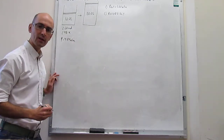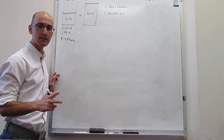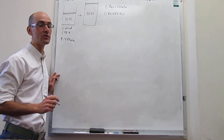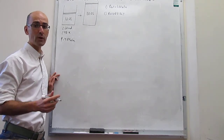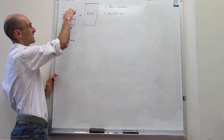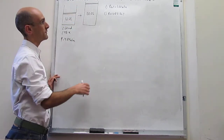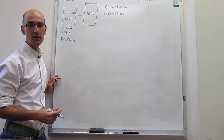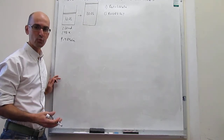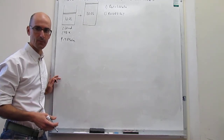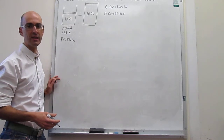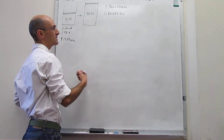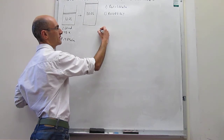We're going to let this gas expand in two different ways. Both of them are going to be isothermal, so the temperature will not change. In one case we're going to do it against a constant external pressure of one atmosphere. In the second case we're going to do this reversibly, which we know will provide maximum work. So let's calculate the work in each one of those two expansions — first, against a constant external pressure of one atmosphere.